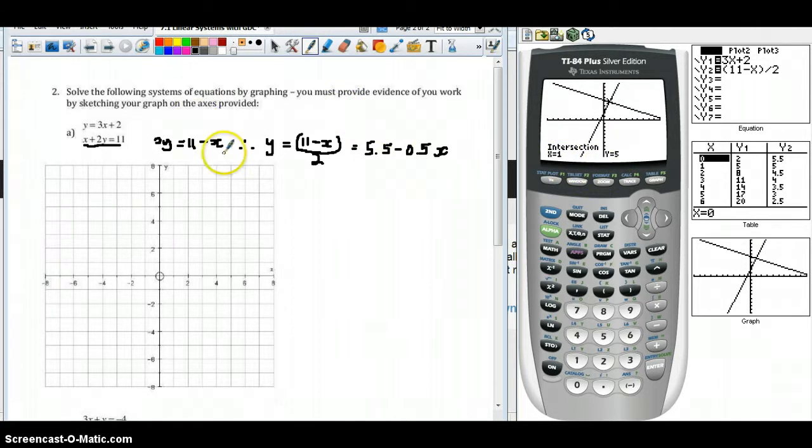If we come back over here to our graph, we have our solution X equal to 1, Y equal to 5. In terms of showing working, we've shown the working for the rearranging of the equation, but what we would also need to do is sketch a graph of what the calculator has done for us. This is going to be our point of intersection, the point 1, 5. We can just go ahead and sketch our lines of intersection. A rough sketch is perfectly acceptable in this case, preferably using a straight edge.